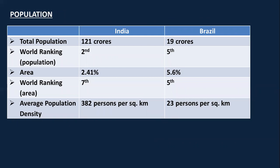Moving ahead to Chapter 6 — Population. India's population is 121 crores whereas Brazil's population is 19 crores. According to population ranking, India ranks second in the world, and the average population density of India is 382 persons per square kilometer.